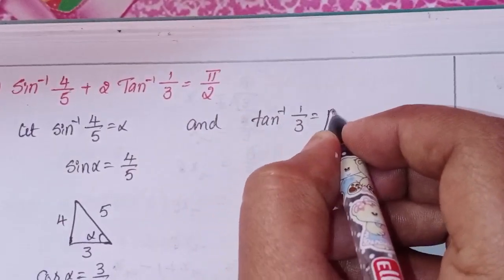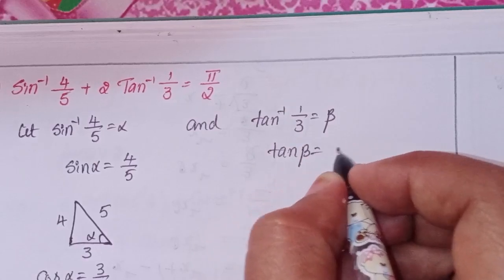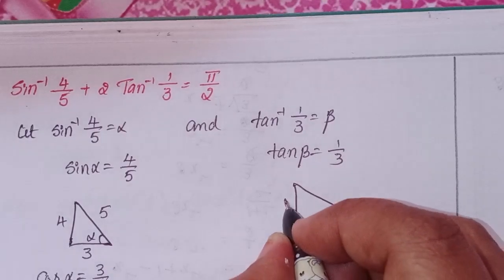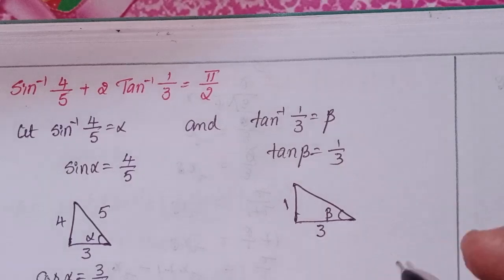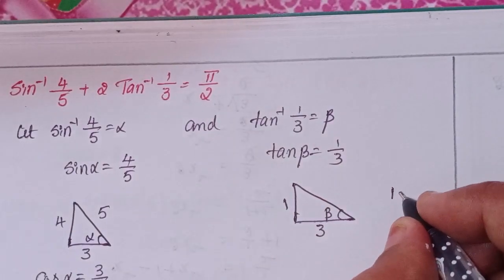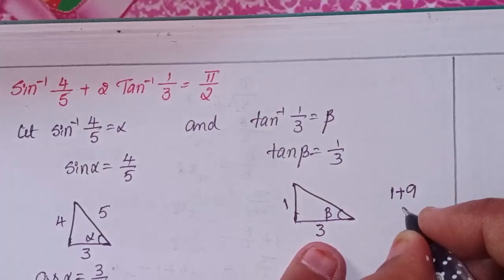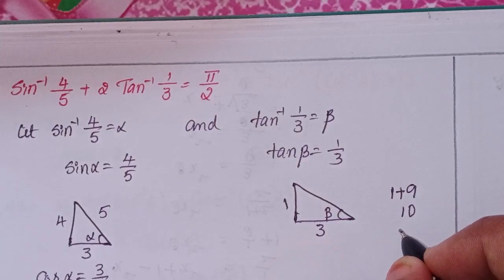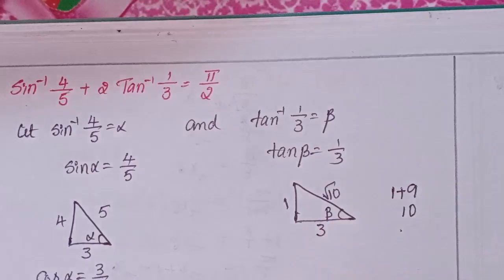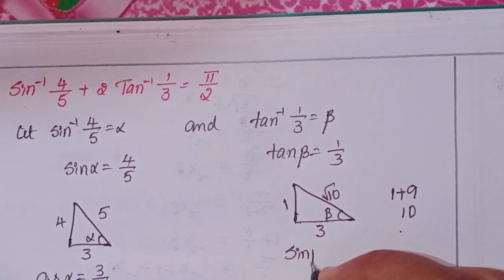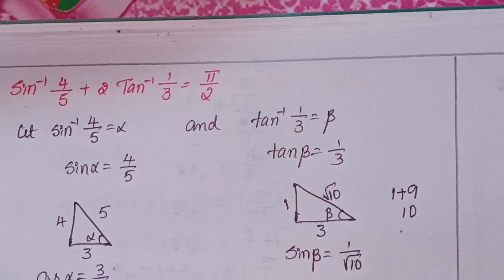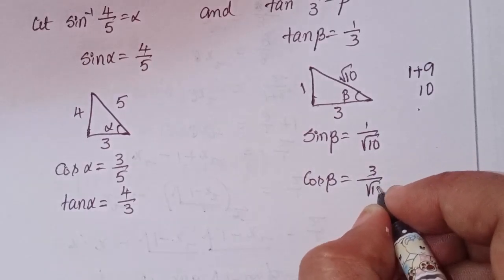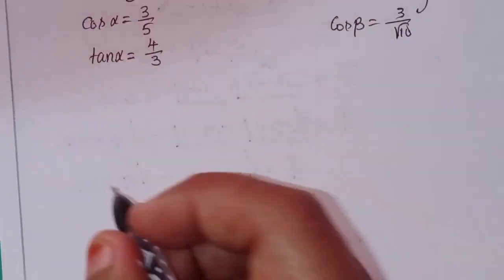So cos(alpha) = 3/5 and tan(alpha) = 4/3. Next, let tan⁻¹(1/3) = beta, so tan(beta) = 1/3. In the right triangle for beta: opposite = 1, adjacent = 3, hypotenuse = √(1² + 3²) = √10. So sin(beta) = 1/√10 and cos(beta) = 3/√10.